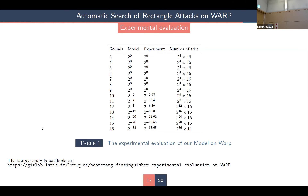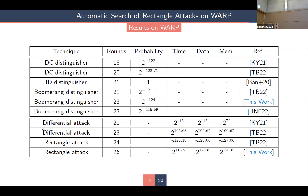This model allowed us to find a new boomerang distinguisher on 23 rounds of WARP. This boomerang distinguisher was also found by the model of Hadipour et al., which was presented just after this session.